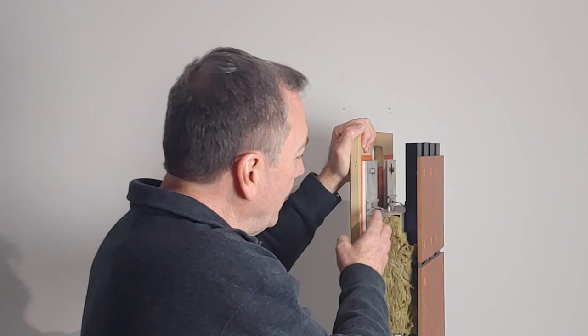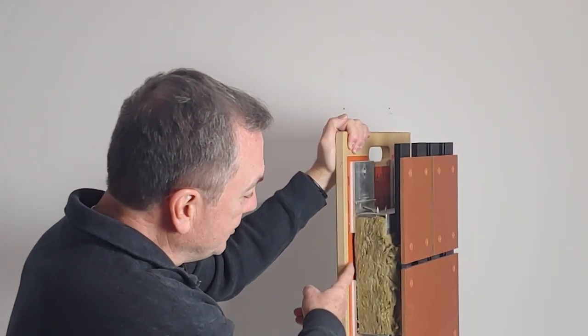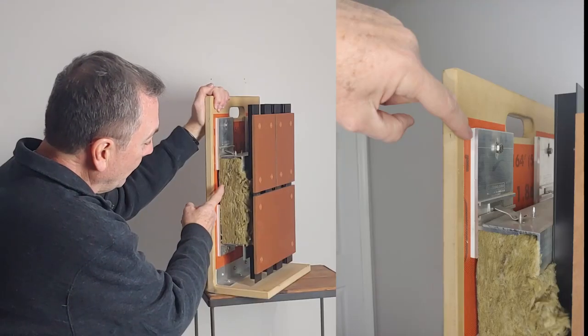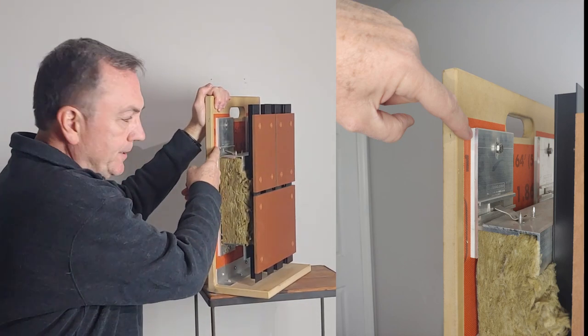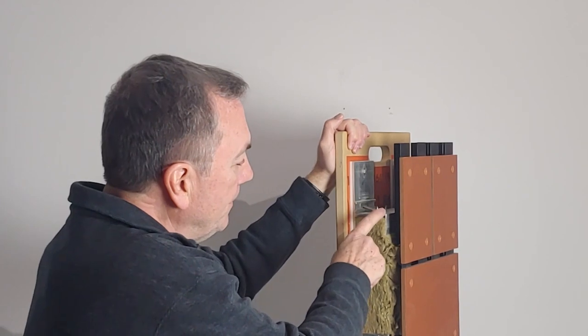Then what they've shown in orange is a waterproofing membrane, and then they have some shims here and then they have aluminum brackets.